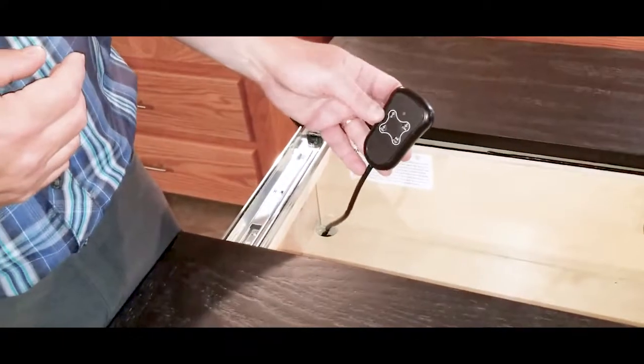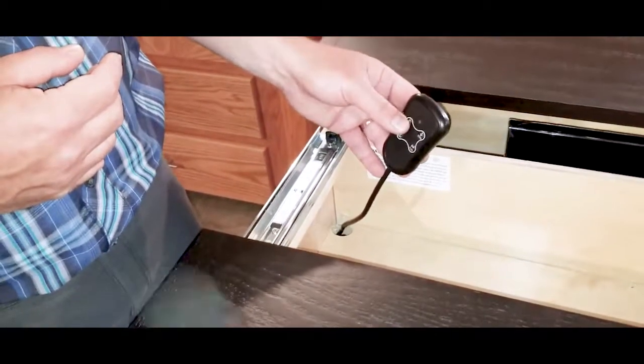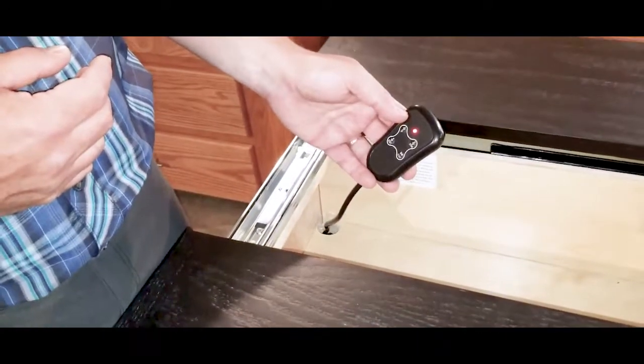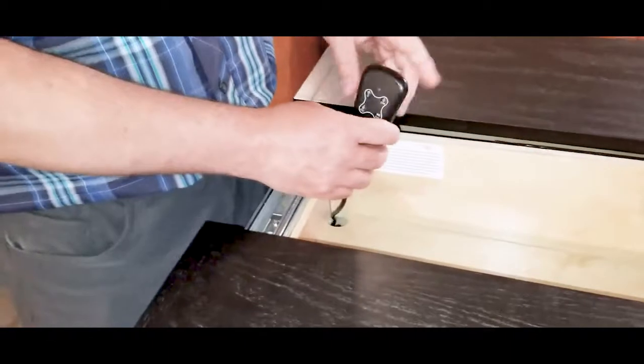With the wired remote, you simply need to push the up button. Again, pushing it again will stop it, push the down button, and it will stay within the threshold that you set.